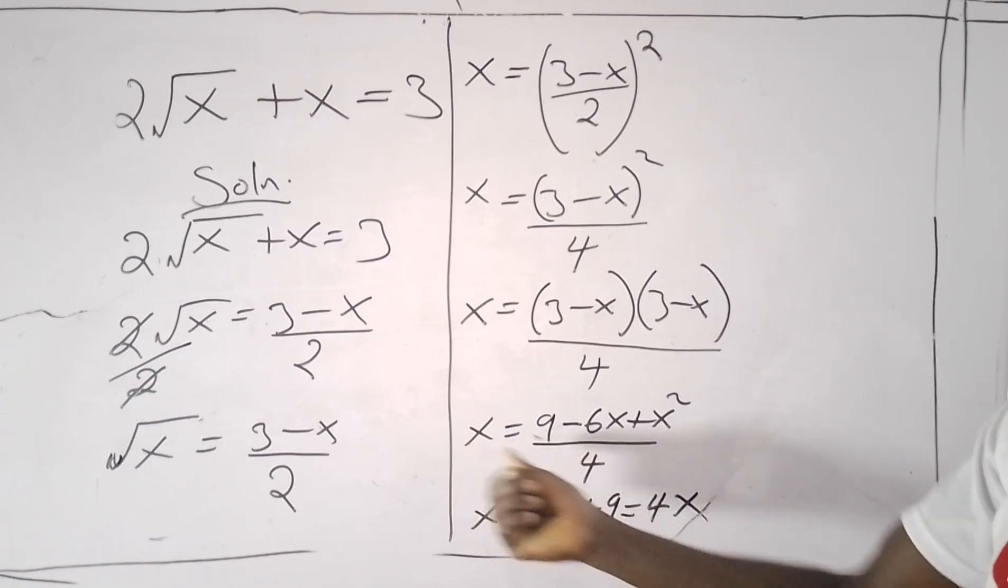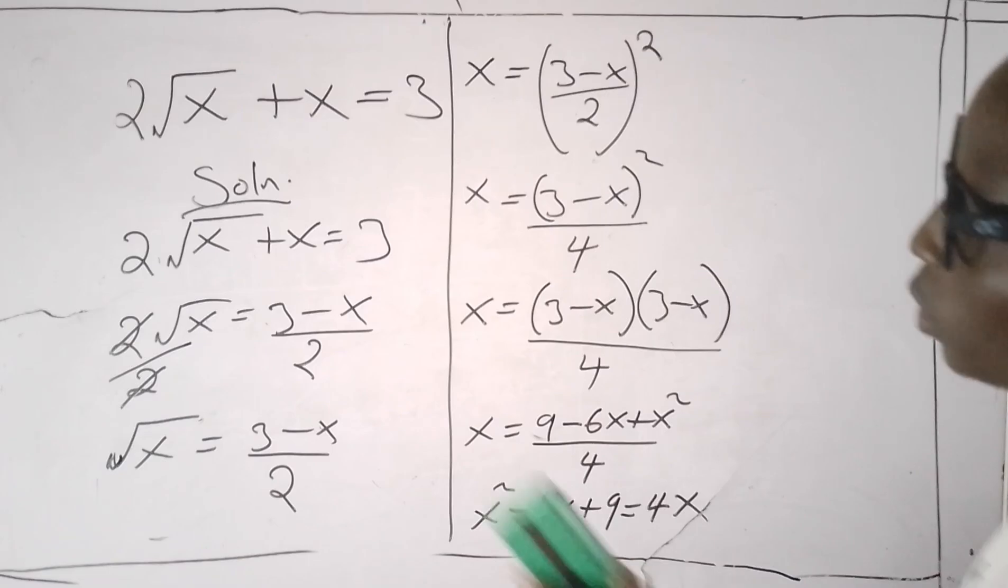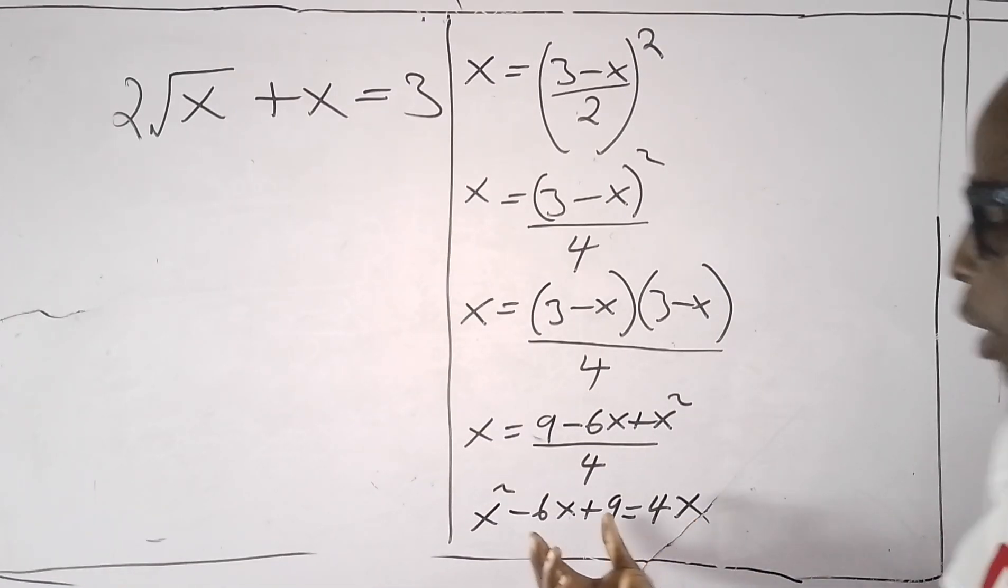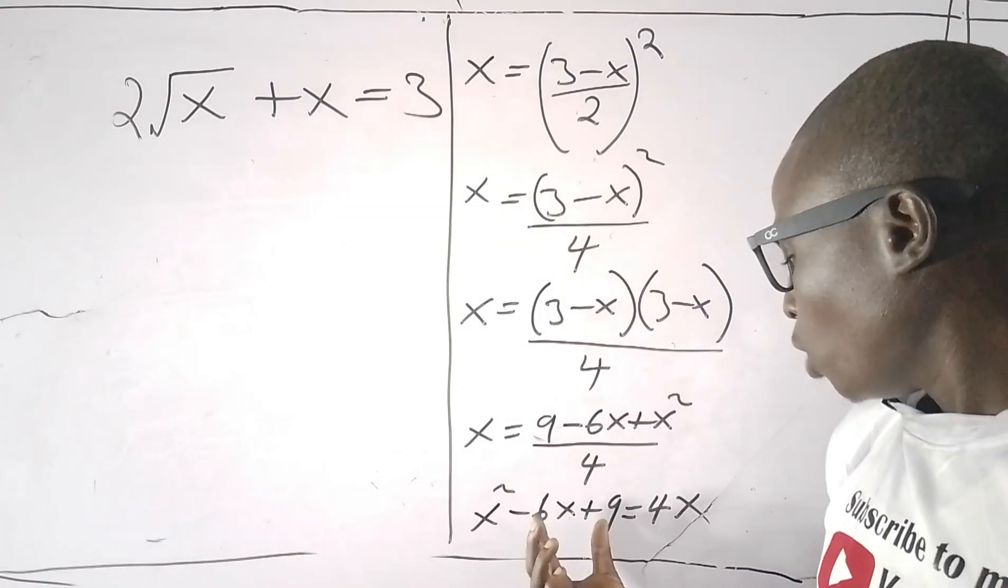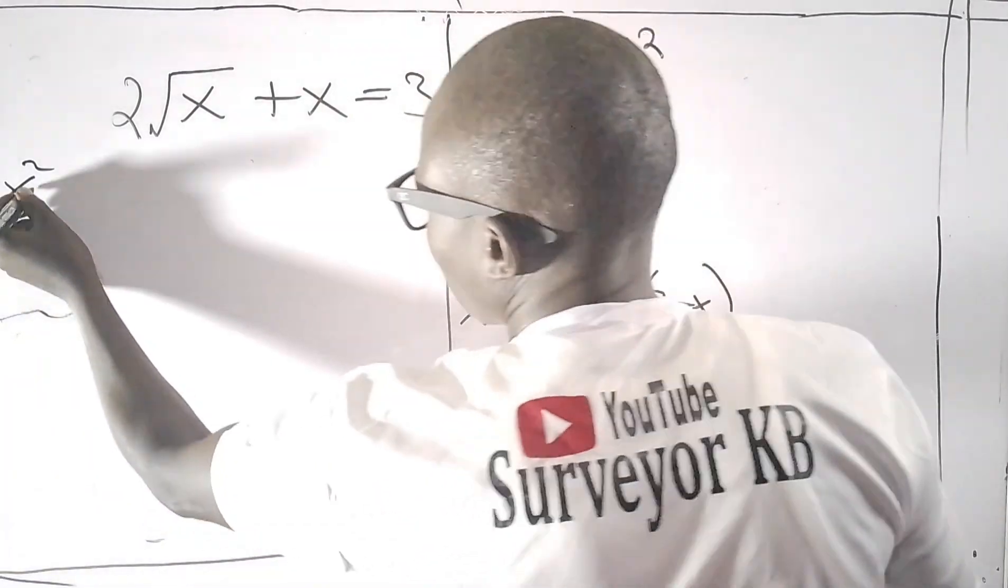I may decide to let everything be equals to zero by taking everything to the left side, so that I have x² minus 4x minus 6x...